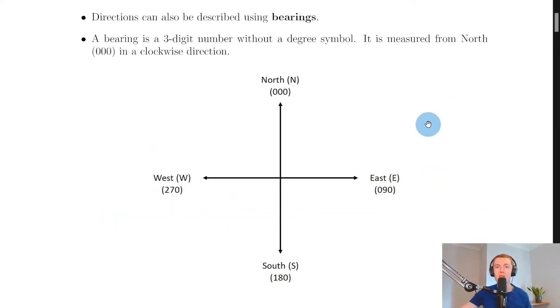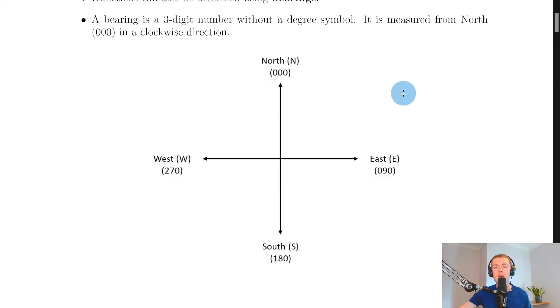We don't just use north, east, south, and west to define directions. We can also use things called bearings. What is a bearing? Well, a bearing is a three-digit number without a degree symbol. It is measured from north, which we give the bearing 000, in a clockwise direction.